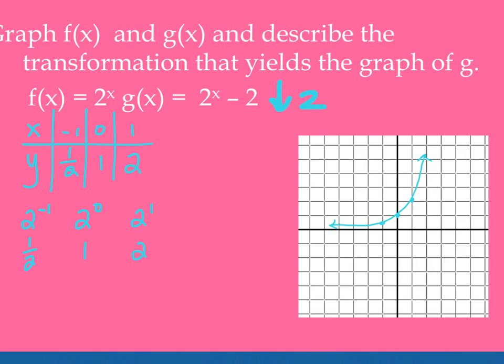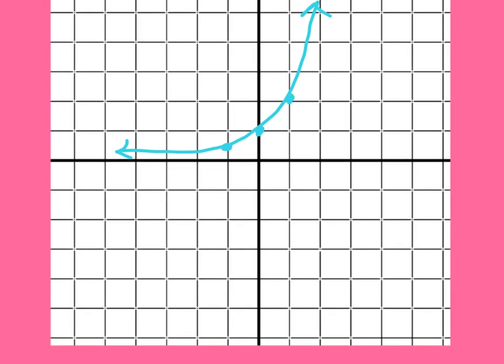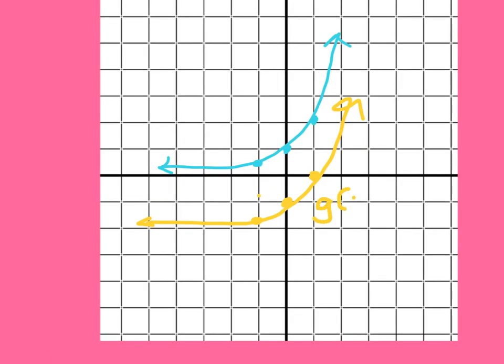Now when I go to graph g(x), I could do the same thing. I could plug in those three points and get straight to points. Or because I already did the work for it and I know the vertical shift is down two, I can simply take each of these points and shift it down two places. And then draw the g(x). So this is my g(x), this is my f(x).